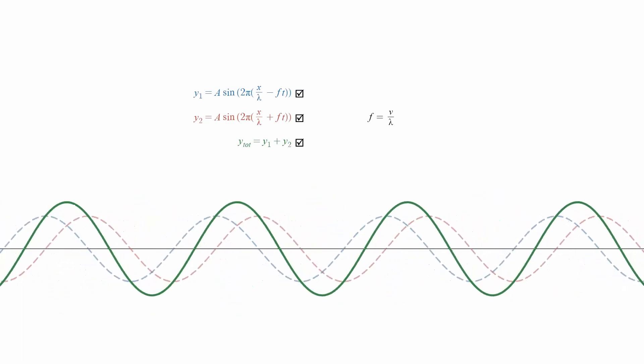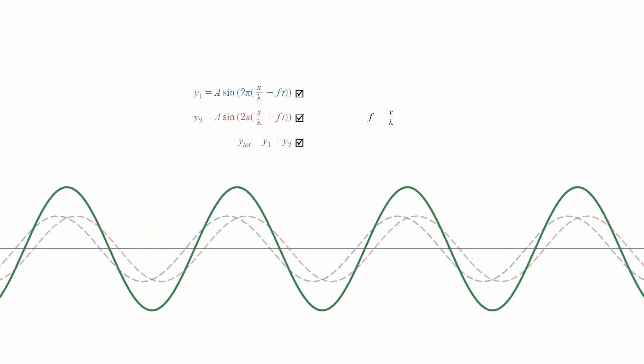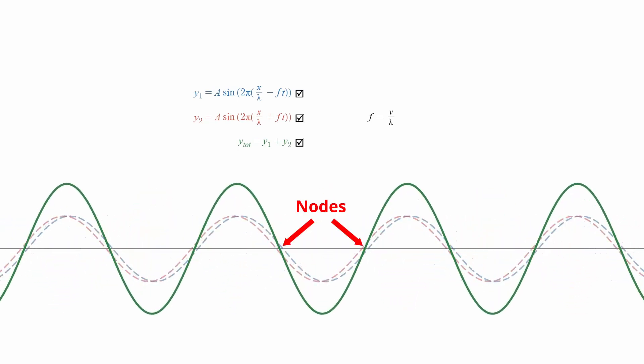The combination of different waves in the same region of space is called interference. In some places, these waves cancel each other out to create destructive interference and form nodes. In other places, the waves add up to create constructive interference and form antinodes.